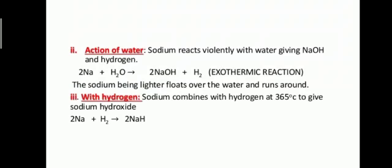Now the reaction with hydrogen. Sodium combines with hydrogen at 365 degrees centigrade to give sodium hydride, not sodium hydroxide. Sodium hydride is formed. When sodium reacts with hydrogen it means that hydrogen is added with the sodium. It reacts and forms sodium hydride, NaH.